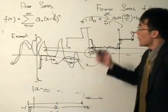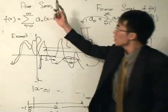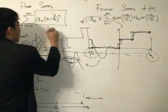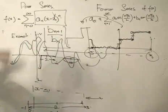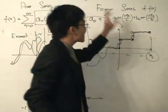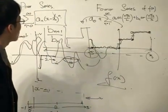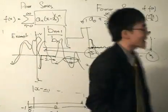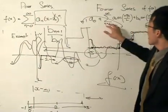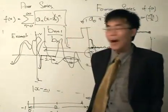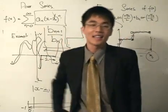One last important distinction: the convergence tests for each series are different. For the power series, we take the term B_n from the series itself and compute the ratio B_(n+1) over B_n. For the Fourier series, the test comes not from the series terms but from f(x) — the function itself. I hope these two differences in convergence theorems between the power series and the Fourier series will be useful in whatever you do in science, engineering, or mathematics.